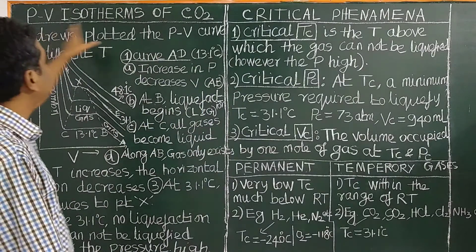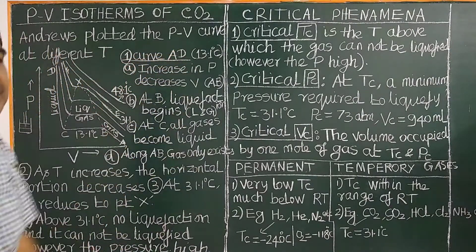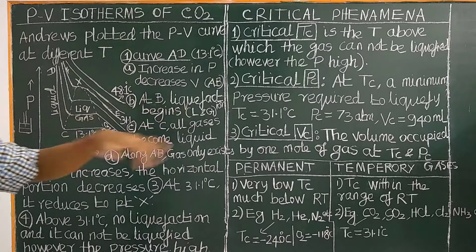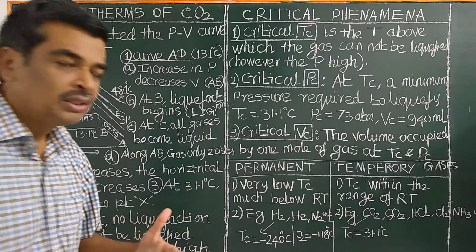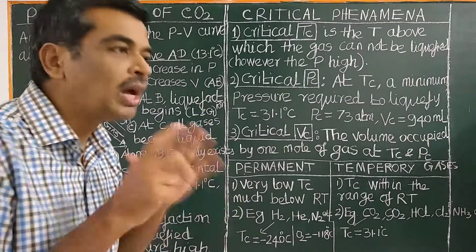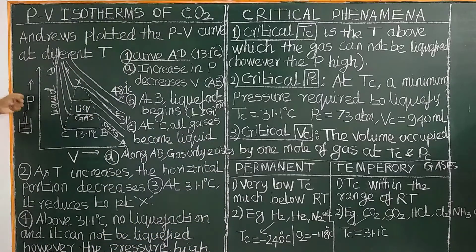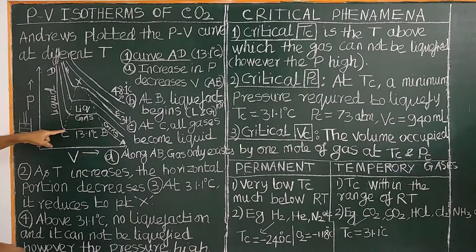Andrews studied the PV relationship of carbon dioxide at a series of temperatures and plotted the PV curves obtained at different temperatures. An isotherm is a plot of pressure against volume at a particular temperature. By varying the pressure, the volume is measured at a particular temperature, and the curve obtained is called a PV isotherm.